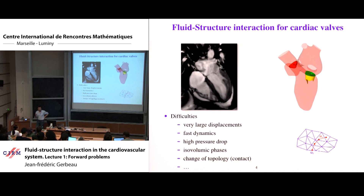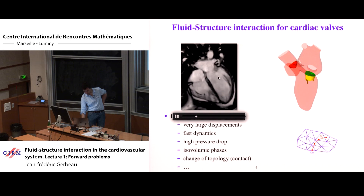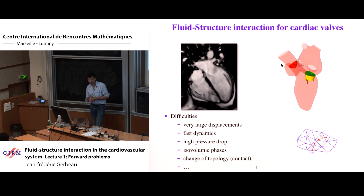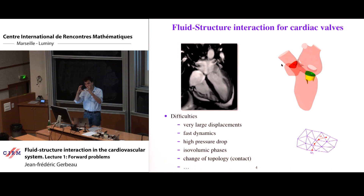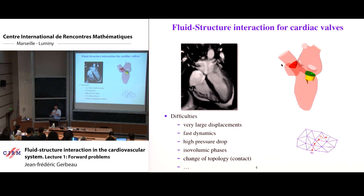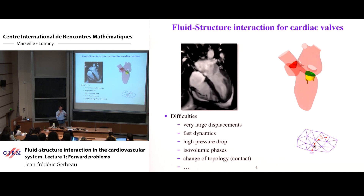The second problem I'm interested in is fluid-structure interaction between the blood and the cardiac valves. There are many difficulties here. First, you can see the cardiac valves involve very large displacements. The dynamics is very fast. When the valves are closed, there is a high pressure drop, which is numerically a challenge. It's also a challenge to correctly simulate the isovolumic phases when all valves are closed. And on top of the complex fluid-solid interaction, you have the problem of change of topology and multi-body contact. So it's a tough problem that we will address using non-conforming, non-body-fitted meshes.